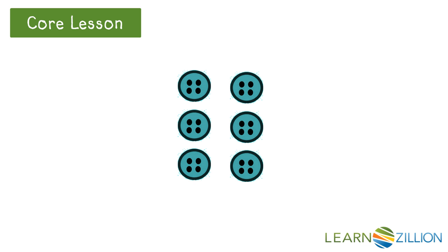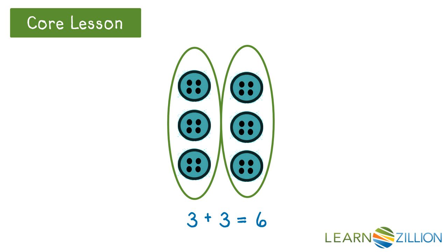There are six buttons here. Because 6 is an even number, the buttons can be divided into two equal groups. The equation 3 plus 3 equals 6 is true for these buttons. There are three buttons in each group, so the add-ins are 3. The sum is 6 because there are 6 buttons all together.